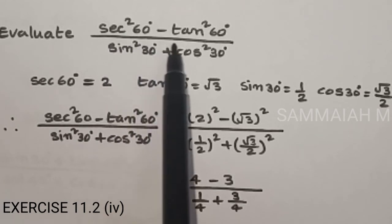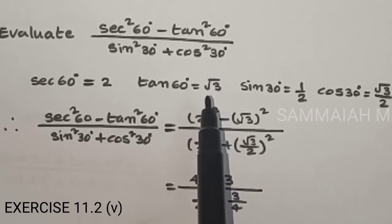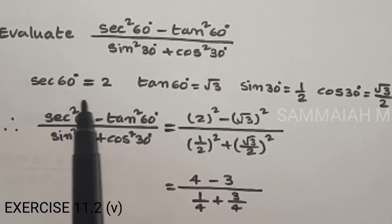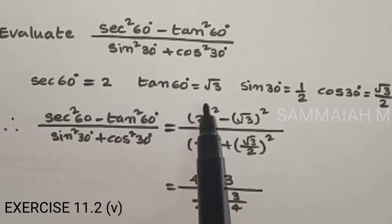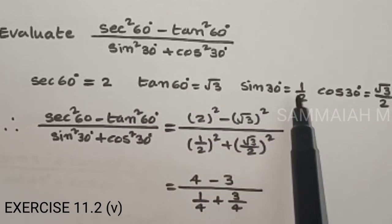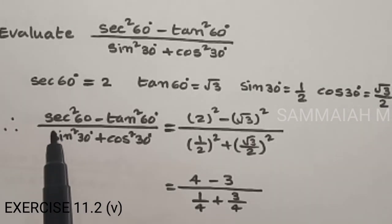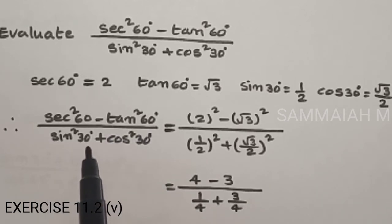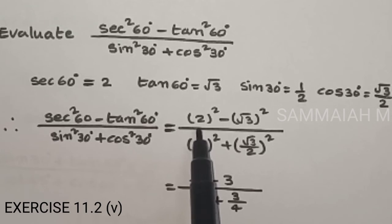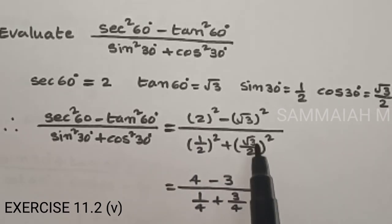Evaluate secant squared 60 degrees minus tan squared 60 degrees upon sin squared 30 degrees plus cos squared 30 degrees. Secant 60 degrees is 2, so secant squared 60 degrees is 4. Tan 60 degrees is root 3. Sin 30 degrees is 1 by 2, cos 30 degrees is root 3 by 2. Therefore the expression equals 2 squared minus root 3 whole squared upon 1 by 2 whole squared plus root 3 by 2 whole squared.